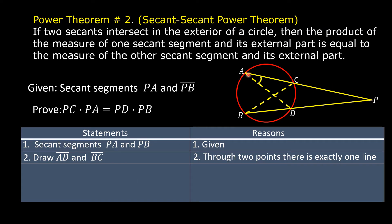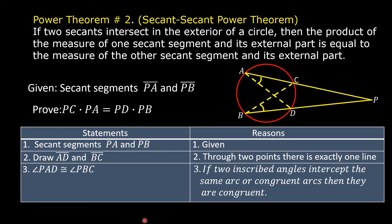Angle PAD is an inscribed angle and the intercepted arc is arc CD. Angle PBC is also an inscribed angle and the intercepted arc is also arc CD. So these two angles intercept the same arc; therefore, they are congruent. So we write for our next statement: angle PAD is congruent to angle PBC. The reason: if two inscribed angles intercept the same arc or congruent arcs, then they are congruent.